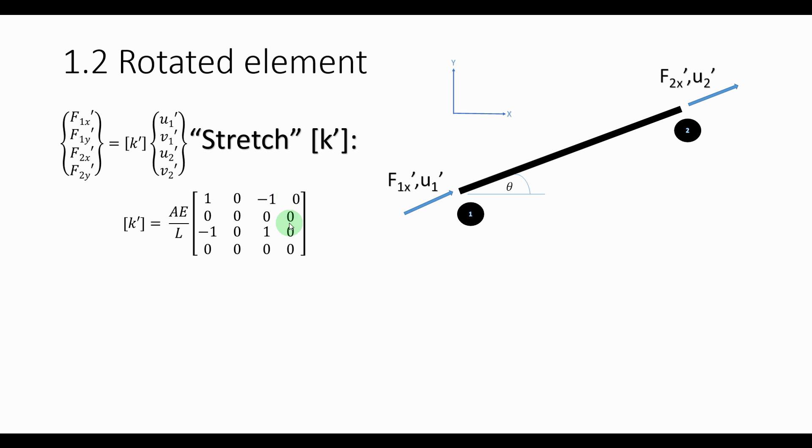So they will be zero there, zero there and also these will be zero. And as you can see the 1, minus 1, minus 1, 1 accounts for the U1 accent and the U2 accent.